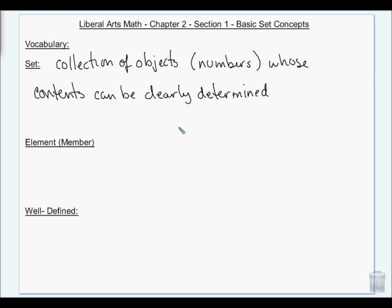That basically means I can't give you a set of squiggly jumble, right? You need to be able to look at the set and be able to say, okay, that's this. Clearly determined.